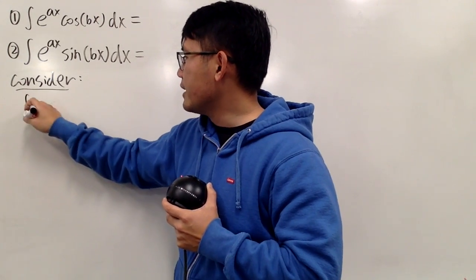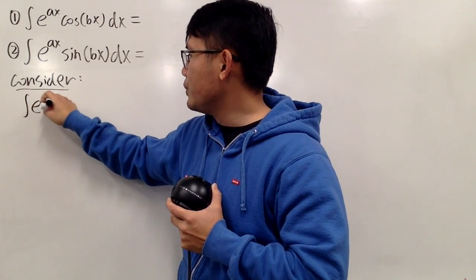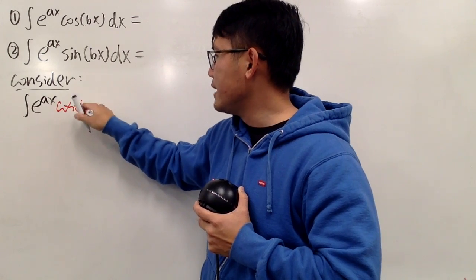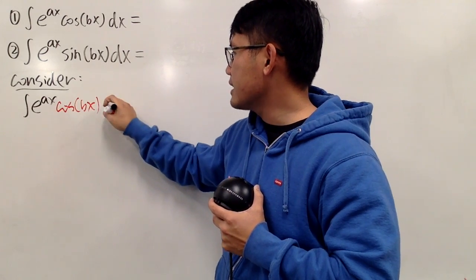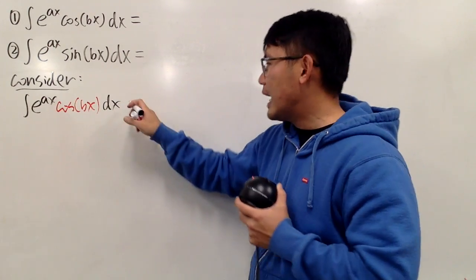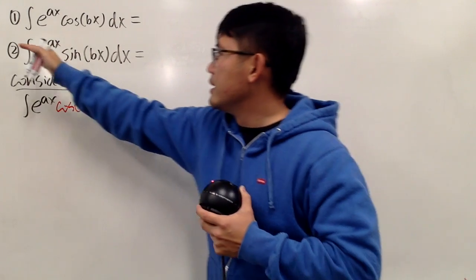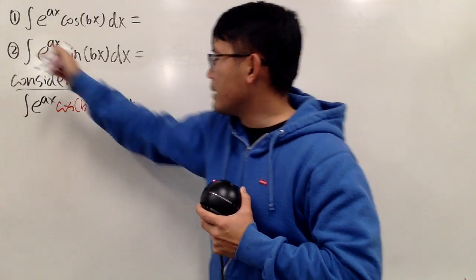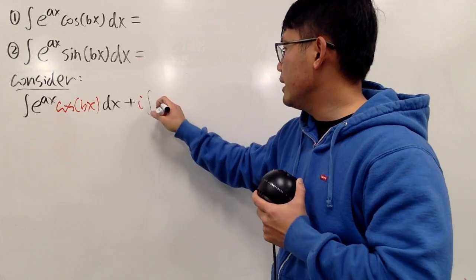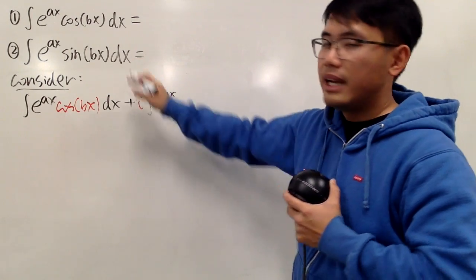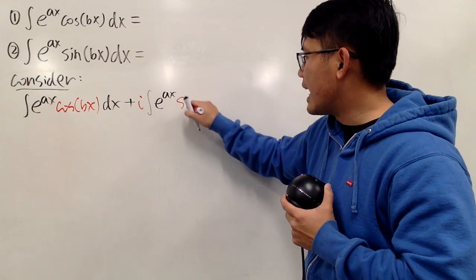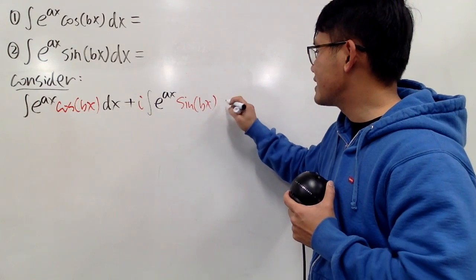First of all, we have the integral of e to the ax times cosine of bx dx. And as I said, I'm going to add i multiplied by the integral of e to the ax times sine of bx dx.